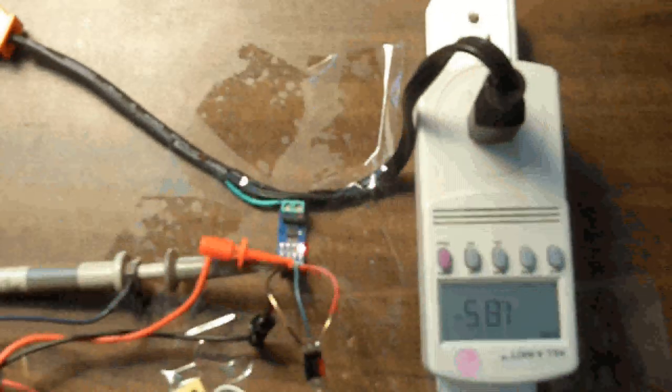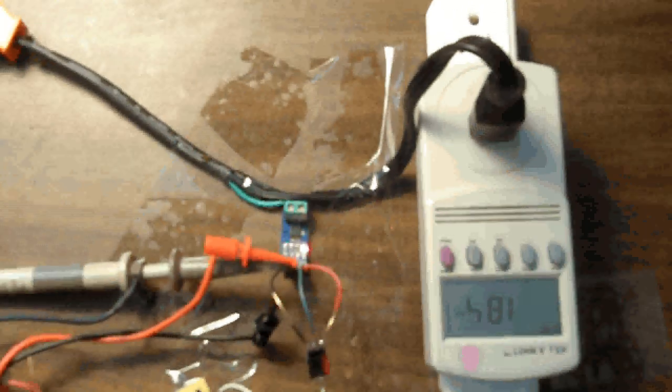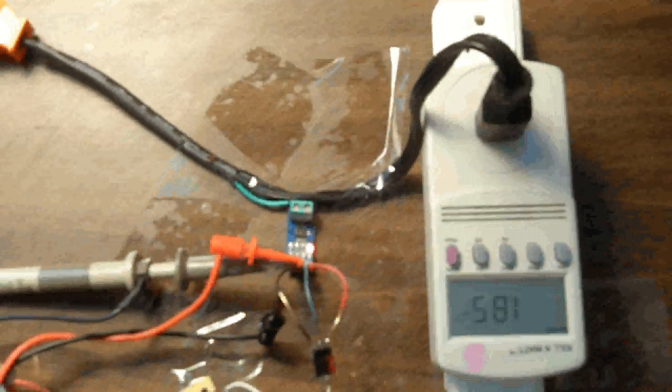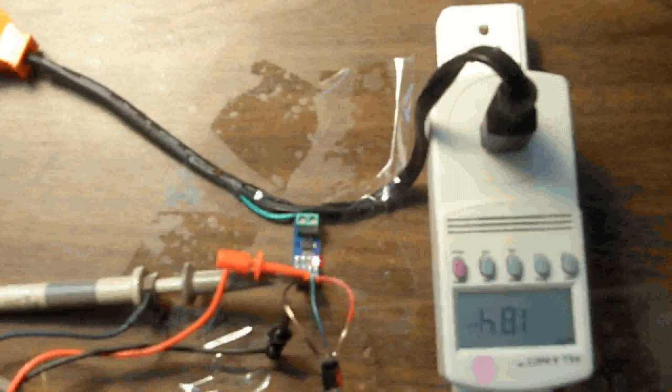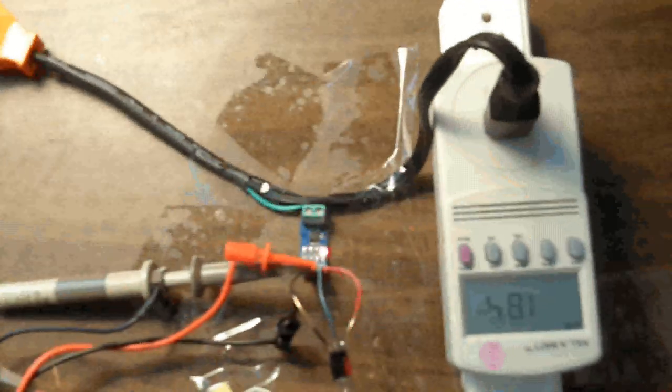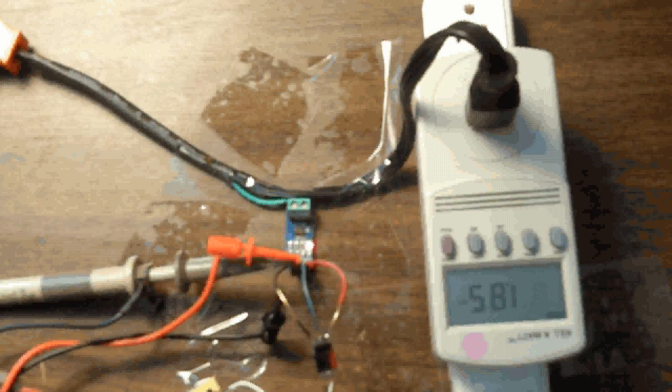Okay, in this video we're going to take a look at measuring the performance of an ACS712 Hall-Effects style current sensing module when used to measure AC current.